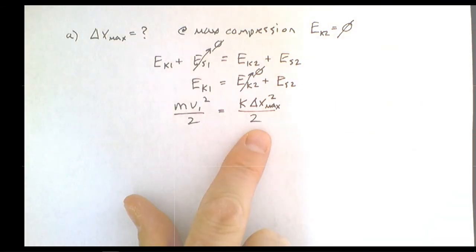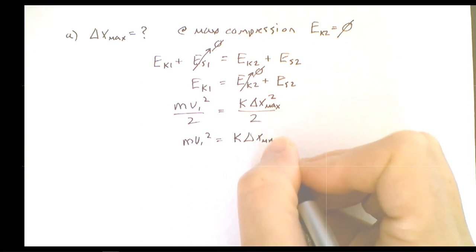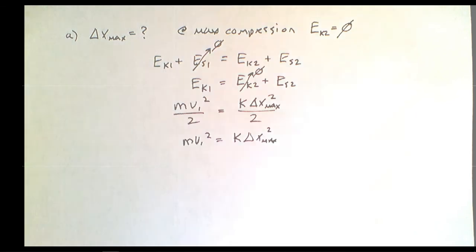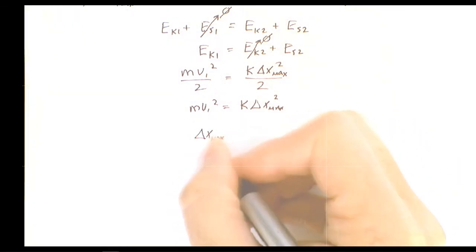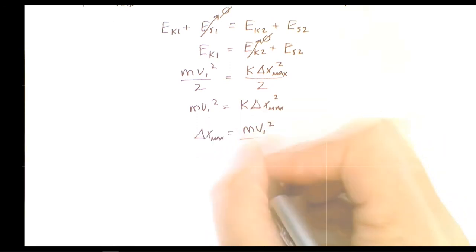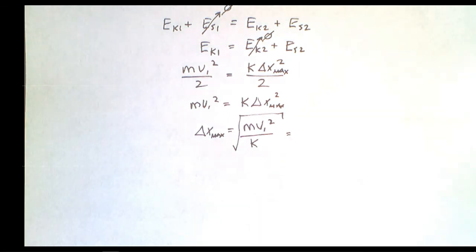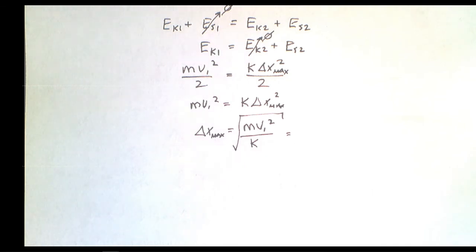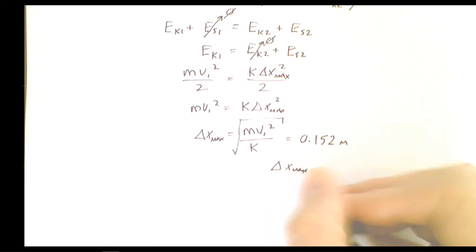Multiplying everything by 2 to simplify: m·v1² = k·(Δx_max)². Solving for Δx_max: it equals the square root of (m·v1² / k). Plugging in mass = 0.8 kg, v1 = 1.2 m/s, k = 50 N/m: Δx_max = √(0.8 × 1.44 / 50) = √0.02304 ≈ 0.152 meters, or approximately 15.2 centimeters.